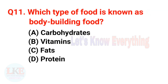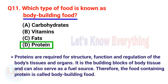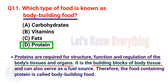Question 11: Which type of food is known as bodybuilding food? A) Carbohydrates, B) Vitamins, C) Fats, D) Protein. The right answer is option D, Protein. Proteins are required for the structure, function, and regulation of the body's tissues and organs. They are the building blocks of body tissue and can also serve as a fuel source. Therefore, food containing protein is called bodybuilding food.